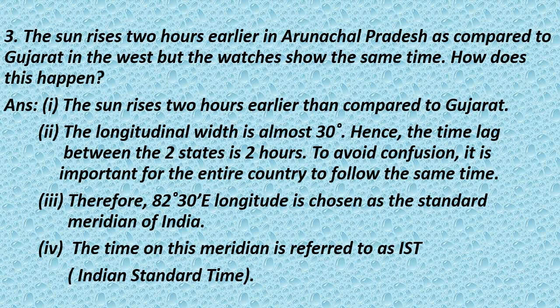Question 5: The sun rises two hours earlier in Arunachal Pradesh as compared to Gujarat in the west, but the clocks show the same time. How does this happen? Answer: The longitudinal width of India is almost 30 degrees, so the time lag between the two states is two hours. To avoid confusion, the entire country follows the same time. Therefore, 82°30'E longitude is chosen as the Standard Meridian of India, and the time on this meridian is referred to as IST, i.e., Indian Standard Time.